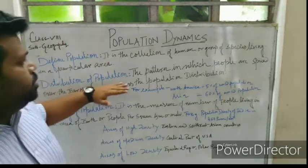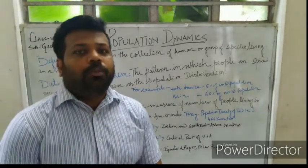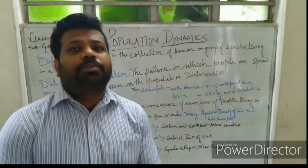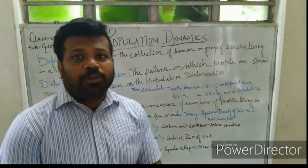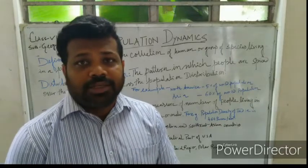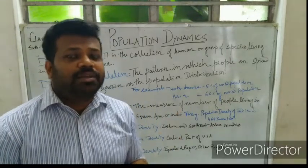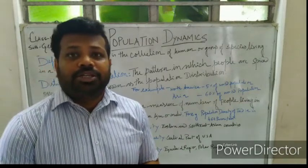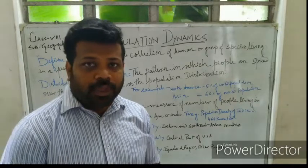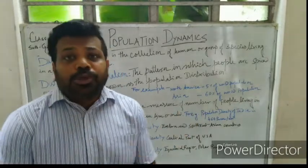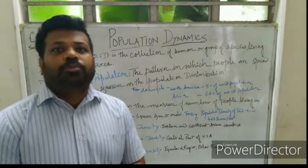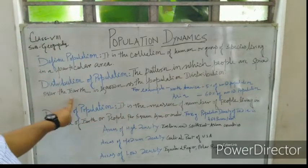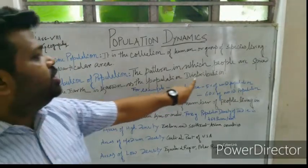Now, distribution of population. You know that population is not distributed equally all over the world. Some places have very high population, some places have even less population. Within India, if you see people in the desert area, there is less population, and if you come to the plainlands, the population is very high. The pattern in which people are spread over the earth is known as population distribution.